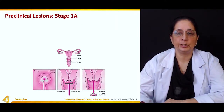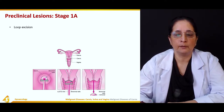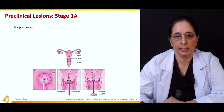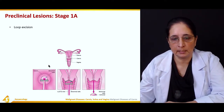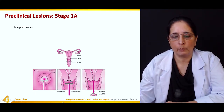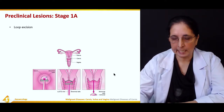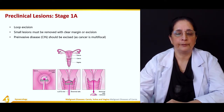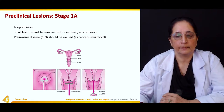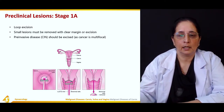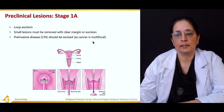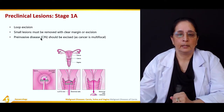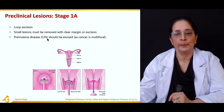For preclinical lesions at stage 1a, the treatment is usually loop excision. The abnormal cells present in the cervix are removed using a wire loop that is inserted and the abnormal cells are excised. Small lesions must be removed with clear margins, and preinvasive disease — carcinoma in situ — should be excised as cervical carcinoma is multifocal. This preinvasive disease is called cervical intraepithelial neoplasia, CIN.